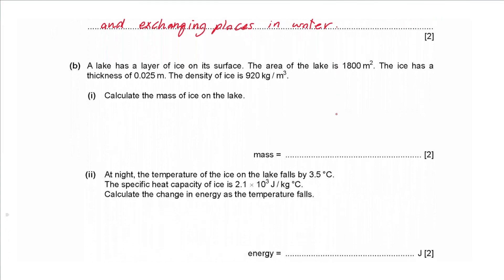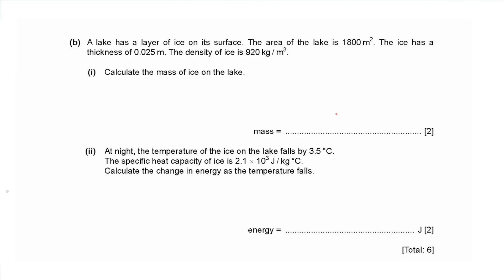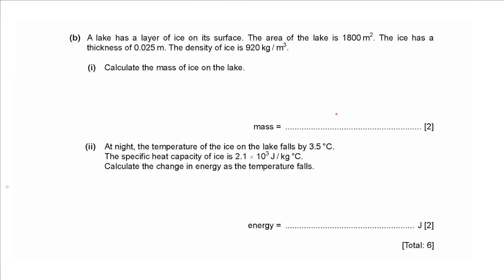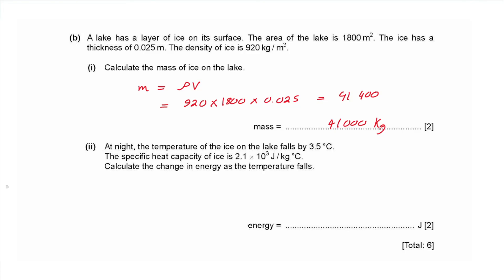Part b: a lake has a layer of ice with area 1800 m², thickness 0.025 m, and density 920 kg/m³. Calculate the mass. Mass equals density multiplied by volume; volume equals area times thickness: 920 × 1800 × 0.025 = 41 400 kg, approximately 4.1 × 10⁴ kg.